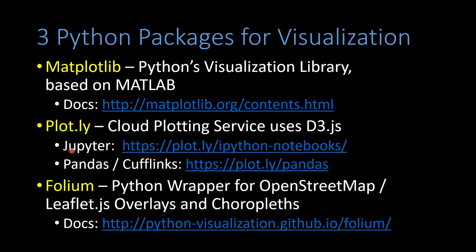One important thing to note is they changed Plotly from version 3 to version 4, and now it uses something called Chart Studio. A lot of the information is still relevant, but you want to make sure you're looking up the Chart Studio docs. Last, we'll look at Folium, which is a wrapper on OpenStreetMap, a free mapping service, that allows us to create data overlaid on a map. You can do this in Plotly, but I think you need a license, and you can also do it in Matplotlib but it's a lot harder.